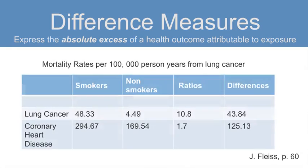Why is this? This table shows us the base rates of death from cardiovascular disease — 294.67 in smokers and 169.54 in non-smokers — are much higher than the base rates of death from cancer, 49.33 and 4.49. The risk difference for smoking in coronary heart disease, 125, is considerably larger than for lung cancer, 43.84. Thus, smoking cessation programs would have a bigger impact on rates of coronary heart disease deaths compared with lung cancer deaths.